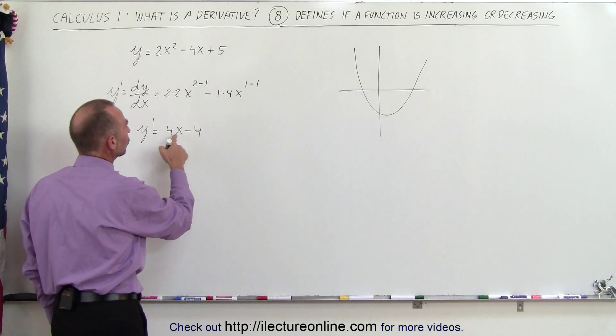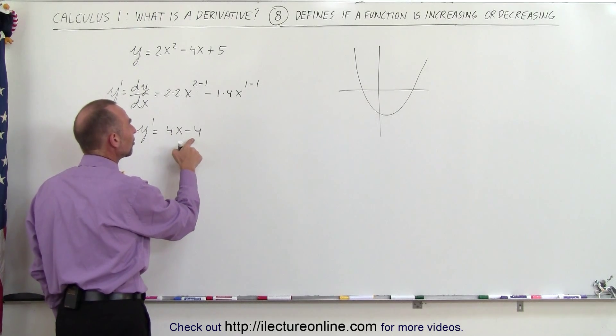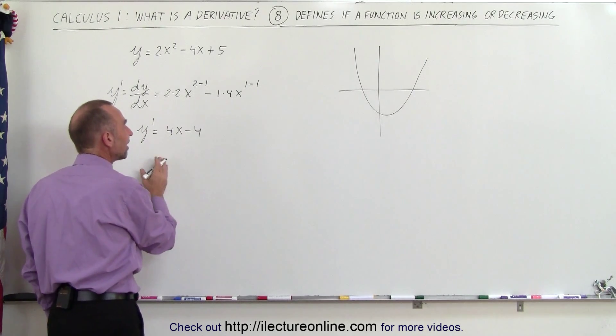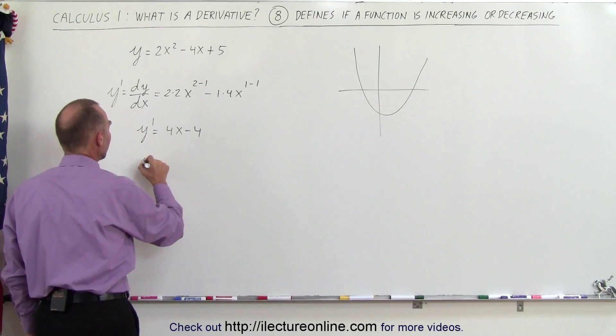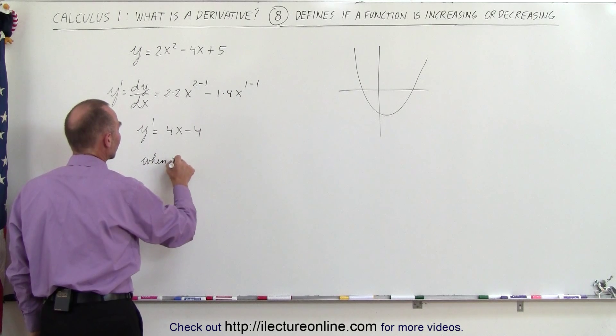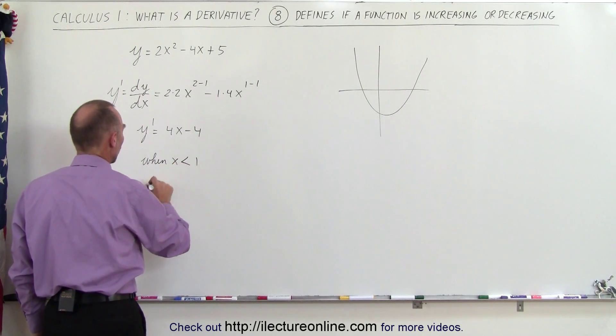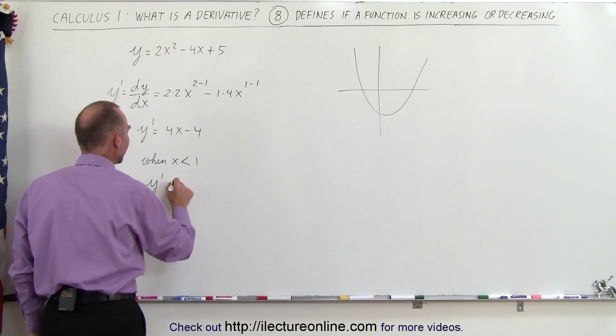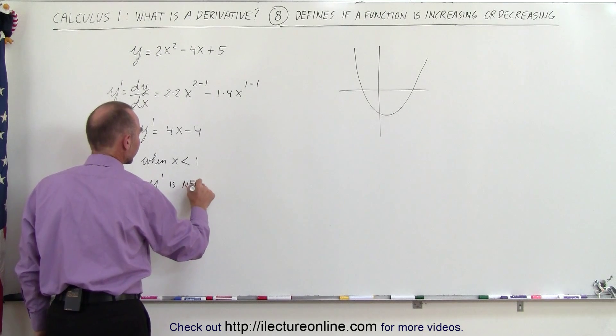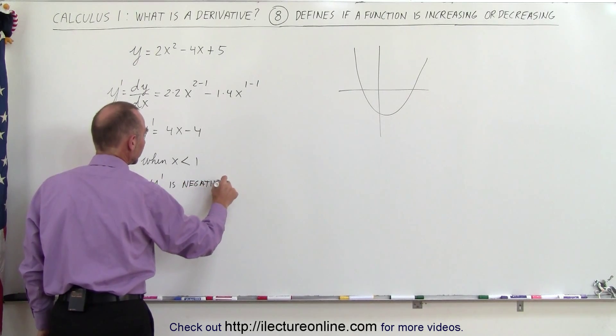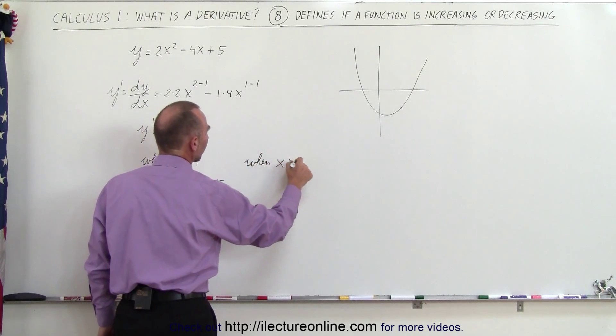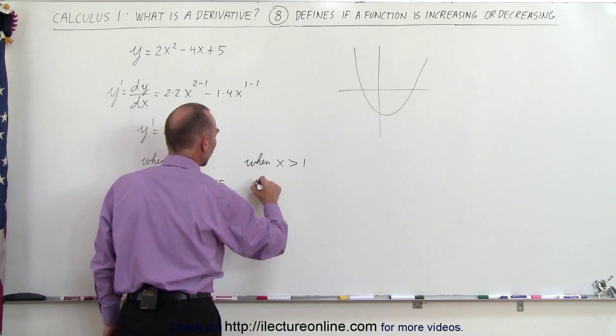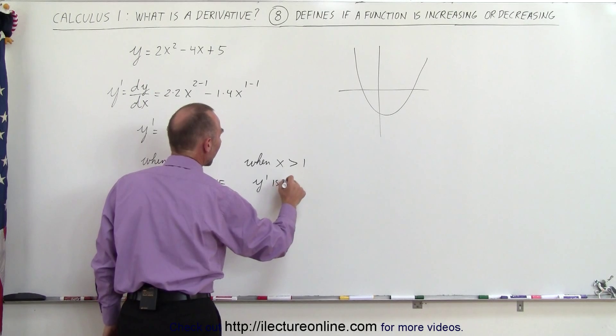Notice that when x = 1, 4 minus 4 is 0. If x is less than 1, this will become a negative value. So when x < 1, y' is negative. And when x > 1, then y' is positive.